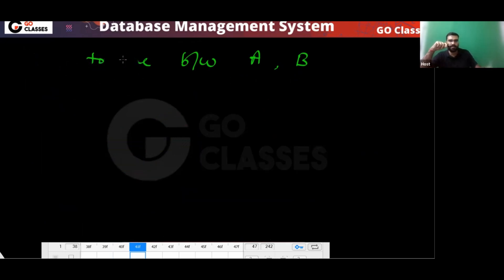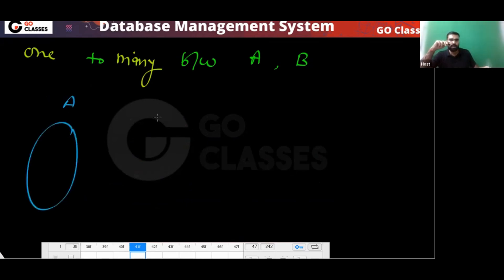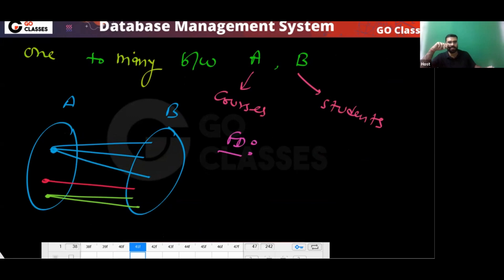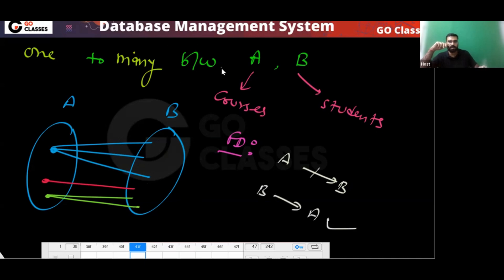Now if you have one-to-many between A and B, then A cannot determine B, because for the same value of A you get many values of B. But B can determine A. So the functional dependency goes from B to A in a one-to-many relationship between A and B.